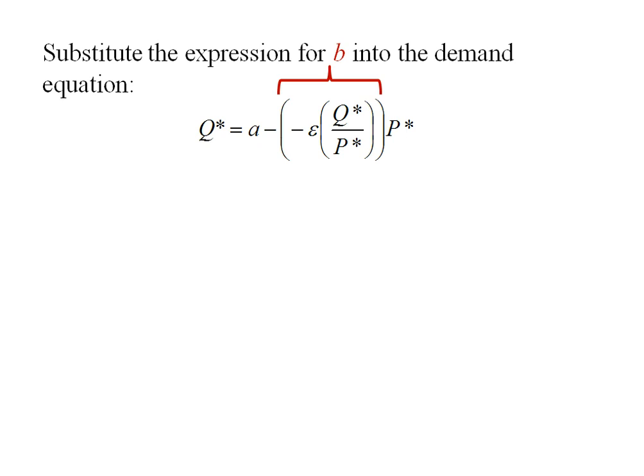Q star equals A minus B times P star, where I've plugged in negative E times Q star over P star for B. I can simplify. Those P stars are going to cancel out and I can distribute that negative sign.